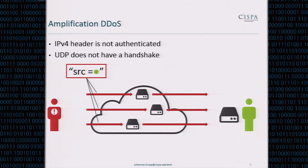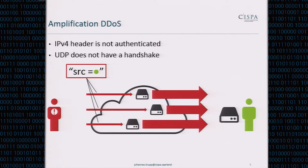What makes amplification DDoS so bad is that the attacker selects reflectors carefully such that their response will be much bigger than the request, giving the attacker an effective bandwidth amplification. There are actually lots of protocols with this property. One example is the old character generator protocol, a legacy protocol that's still out there. Widely used protocols such as NTP, the network time protocol, or DNS, the domain name system, are also vulnerable.